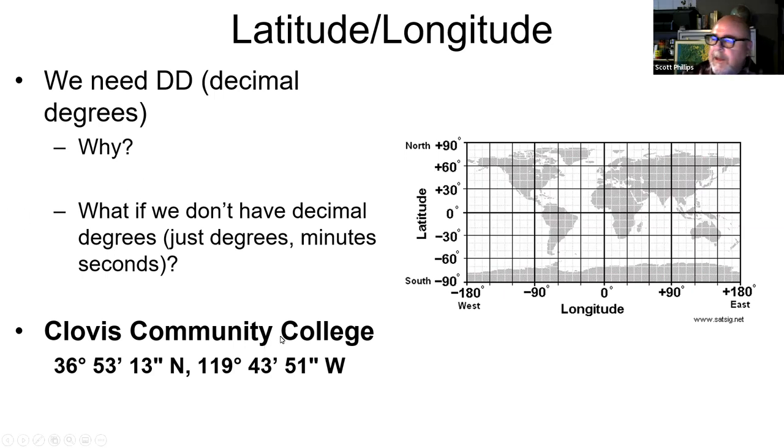Let's walk through that. Clovis Community College is at 36 degrees, 53 minutes, 13 seconds north, and 119 degrees west, 43 minutes, 51 seconds. So it'd be about 120, pretty close along this line and up about just above 30. It'd be kind of about here if we were using this kind of a grid.